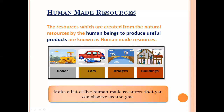Bridges — to connect places, we make bridges from wood, iron, or steel. These bridges are created by human beings. Buildings — we use different materials like bricks, steel, iron, wood, etc. to make a building, and buildings are created by human beings. So those resources which are created from natural resources by human beings to produce useful products are known as human-made resources.